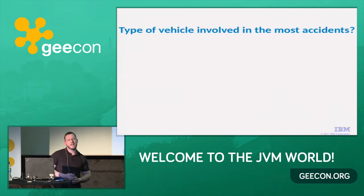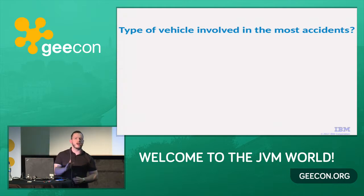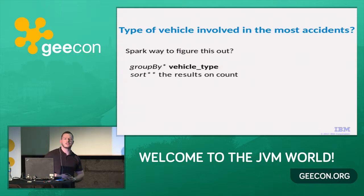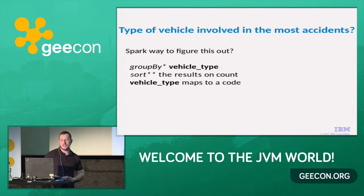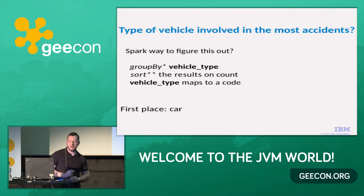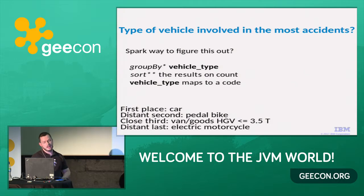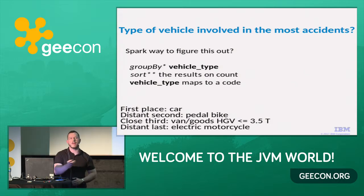Which type of vehicle is in the most accidents? The data goes back to 1975. We're going to do a group by vehicle type, sort the results, and the vehicle type might be a code — 1 being a car, 2 being a moped, 3 a pedal bike, 4 a tractor. First place — cars, no surprise. Most things on the road are cars. Second, pedal bikes. Third, vans. Last place: electric motorcycles — probably not many of them around; maybe they're safer drivers. And what weather should I be avoiding? Group by weather conditions, sort the results. First place: fine with no high winds. Second: raining with no high winds. Distant last: snowing — maybe because you're staying indoors.